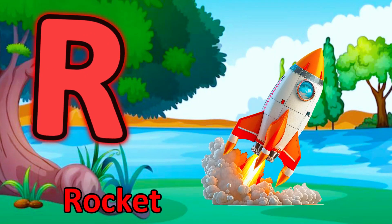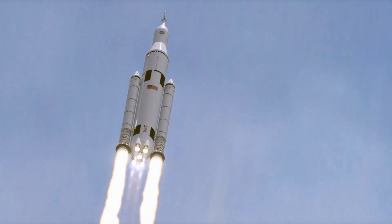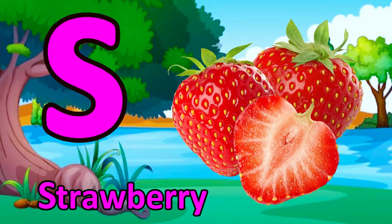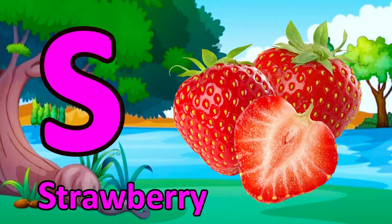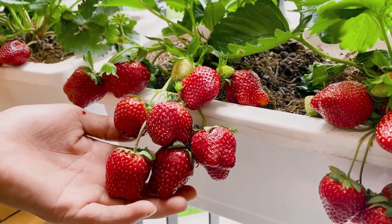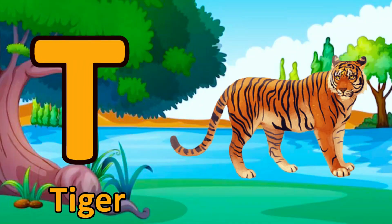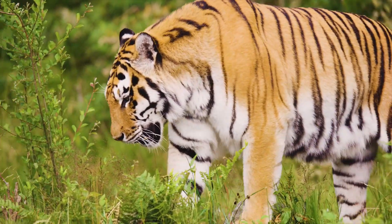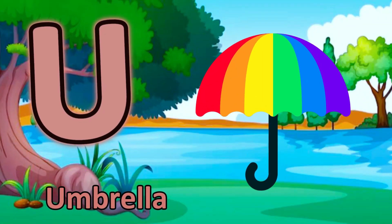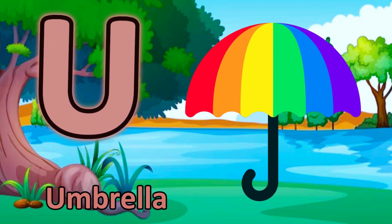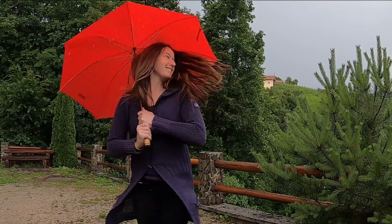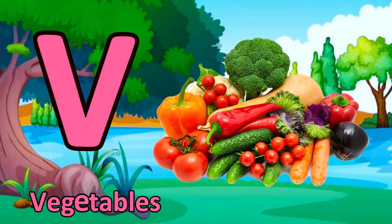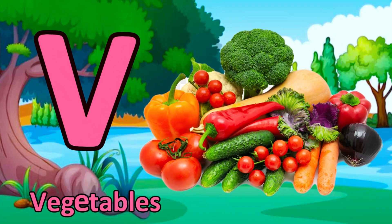R for rocket. T for tiger. U for umbrella.